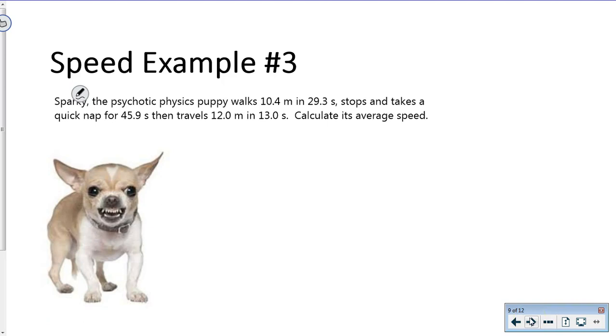Sparky the psychotic physics puppy walks 10.4 meters in 29.3 seconds, stops and takes a quick nap for 45.9 seconds, then travels 12.0 meters in 13.0 seconds. Calculate its average speed. There are two ways to do this. As soon as it says average speed, we don't care about instantaneous speeds—we only care that v equals total distance divided by total time.